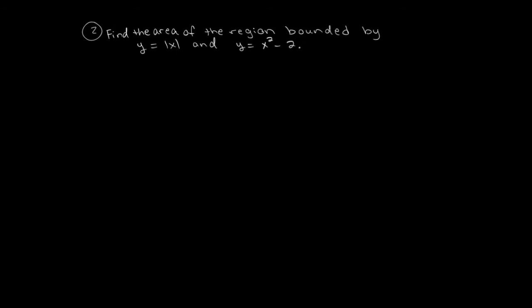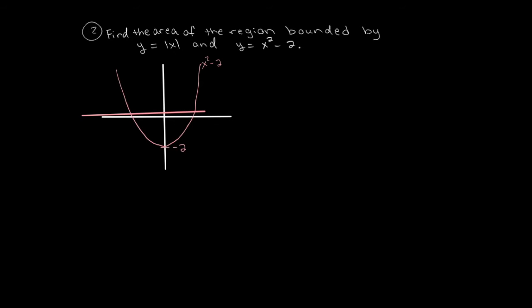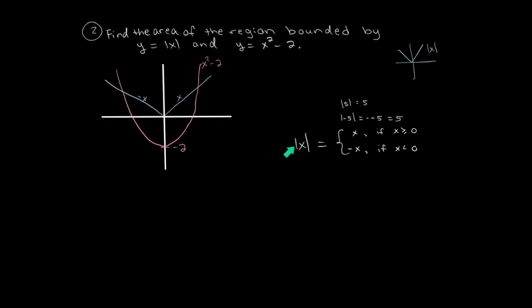Let's find the area of the region bounded by absolute value of x and x squared minus 2. We start by drawing: take the x squared graph and shift it down 2 units. The absolute value of x equals x when x is greater than or equal to 0, and negative x when x is less than 0. So its graph is a V-shape: y equals x on the right and y equals negative x on the left.